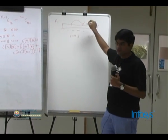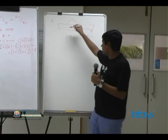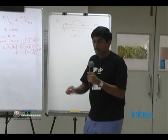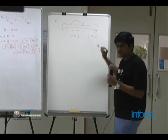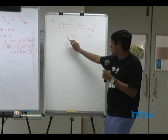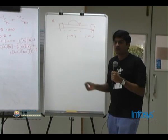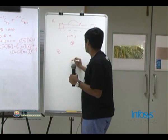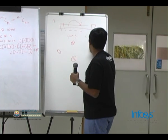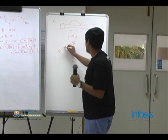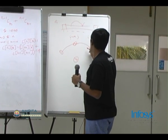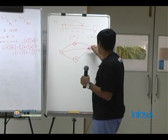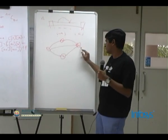You are given edges of the form i to j, with i less than j. Count the number of ways to reach n from 1. For example, with 4 vertices and edges 1 to 2, 2 to 4, 3 to 4, 1 to 3, and 1 to 4, the number of ways to reach 4 from 1 is 3.